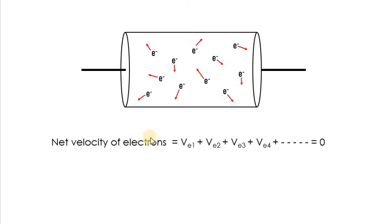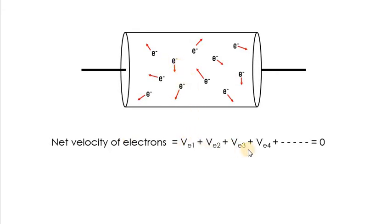Consider a wire and an expanded view of it where we can see some electrons and their directions of movement shown in red. With no potential applied across the wire, all electrons move in random directions with no fixed direction. If we add the velocities of each electron — ve1, ve2, ve3, and so on — the net velocity comes out as zero. That is why we say there is no current flowing in this wire.